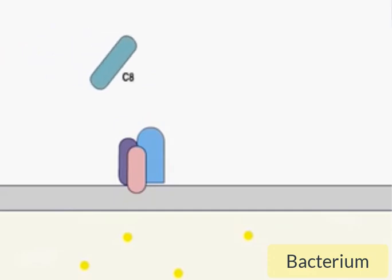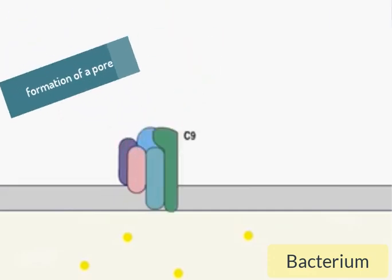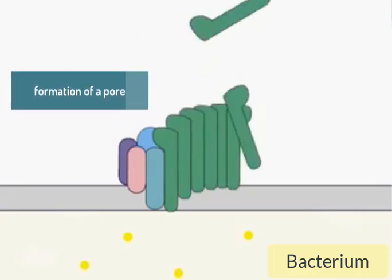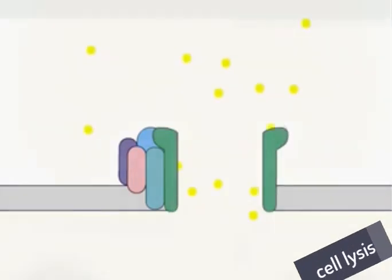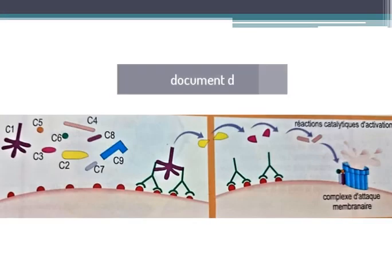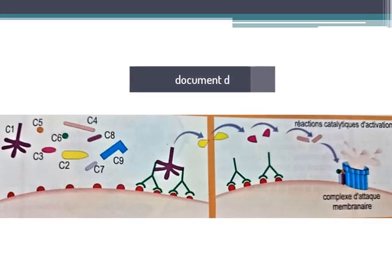This complement cascade leads to the formation of the membrane pore which eventually leads to cell lysis. Document D of your book shows the activation of the complement cascade by antibodies.